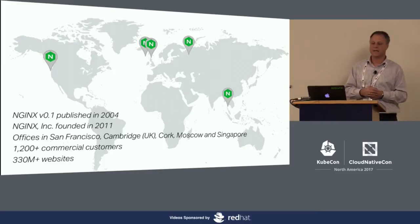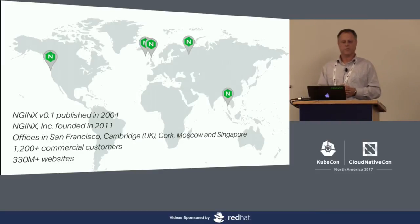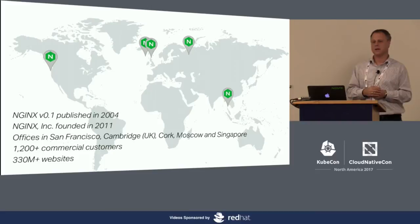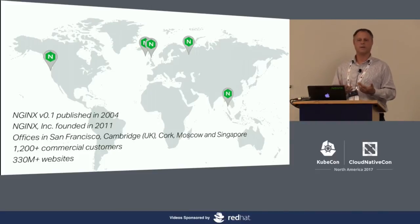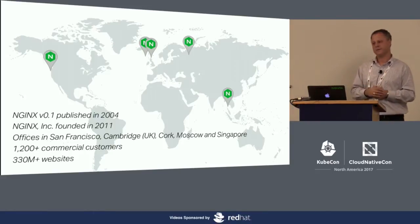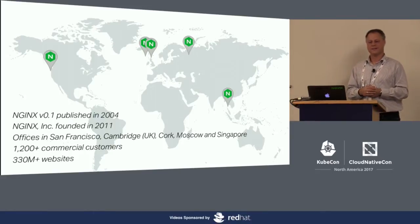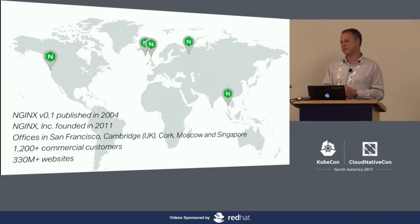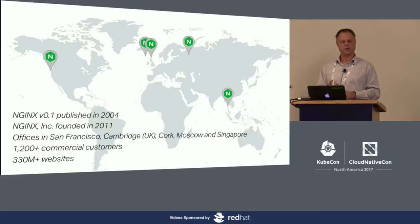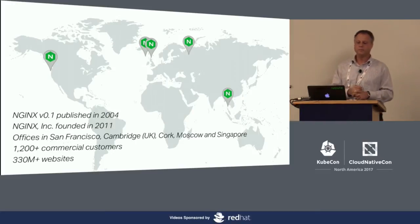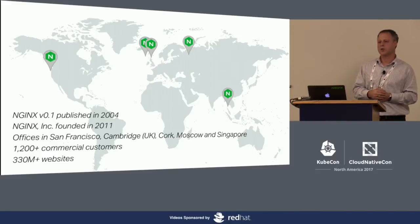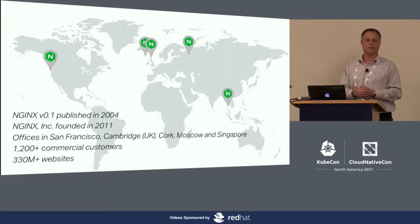If you fast forward to today, Nginx is a globally distributed company backed by first-class VCs. We have offices around the globe — headquarters in San Francisco, with offices in the UK, Ireland, Moscow, and Singapore. We have over 1,200 commercial customers and our technology is driving over 330 million sites.